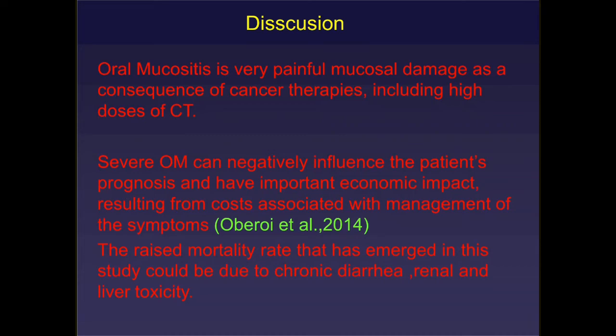Mucositis is a very painful mucosal damage resulting from cancer therapies including high doses of chemotherapy. Severe oral mucositis can negatively influence the patient's prognosis and has an important economic impact from costs associated with symptom management. The raised mortality rates in this pilot study were due to chronic diarrhea and high toxicity to the GIT, renal, and/or liver.